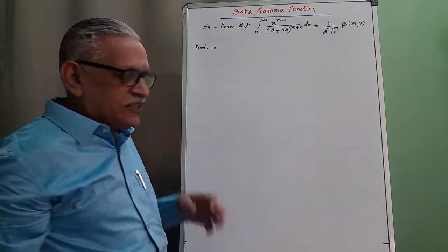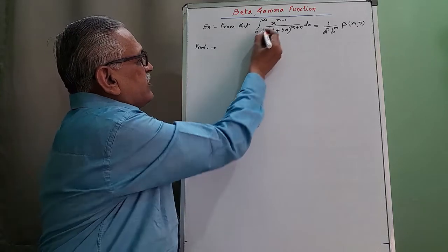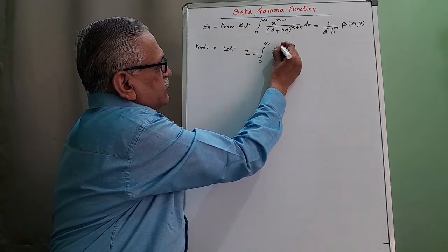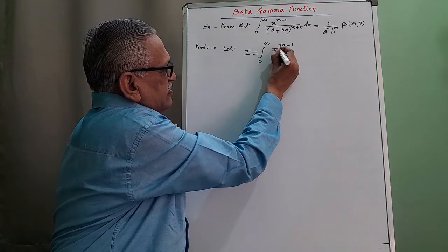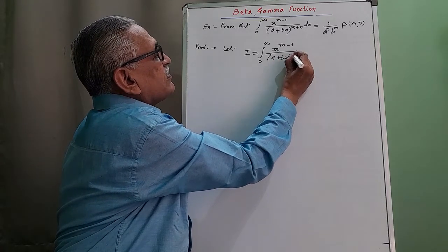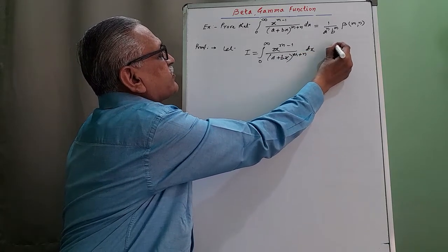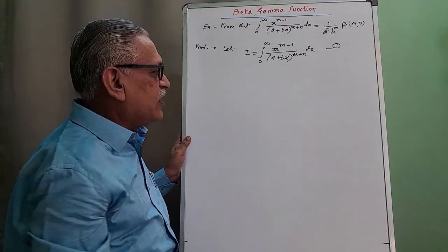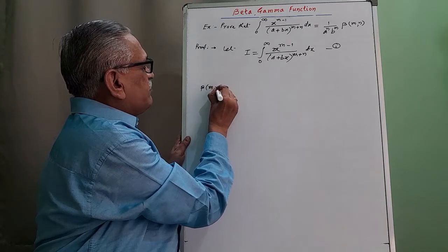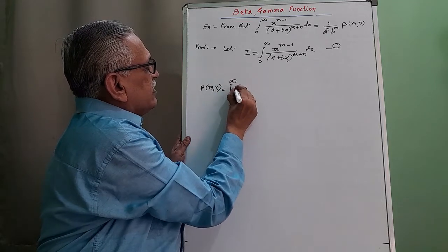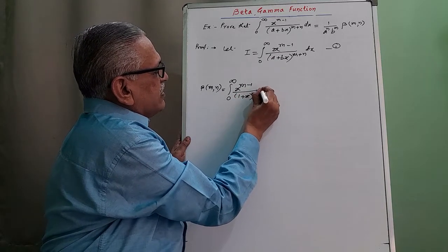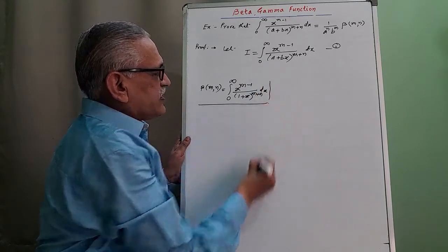To convert in terms of beta, we try to convert the given integral. Let I equal the integration from 0 to infinity of x to the m minus 1 divided by (a plus bx) raised to m plus n, with respect to x — call this equation 1. We know the second definition of beta: beta of m, n equals the integral from 0 to infinity of x to the m minus 1 divided by (1 plus x) raised to m plus n, with respect to x. We try to convert our integral into this form.